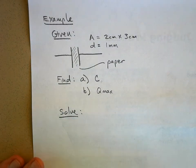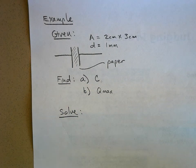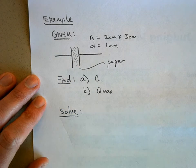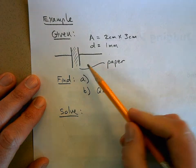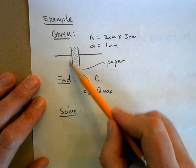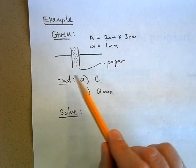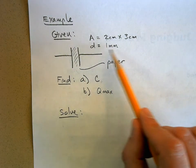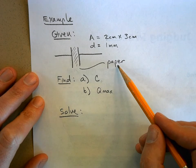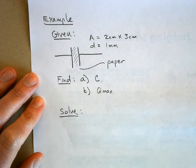Okay, here's an example problem. Here's what's given. We have a parallel plate capacitor and it has an area of two centimeters by three centimeters and the distance between the plates is one millimeter and we've got regular old paper, just plain old paper between the plates.